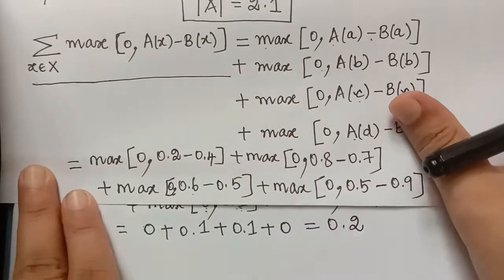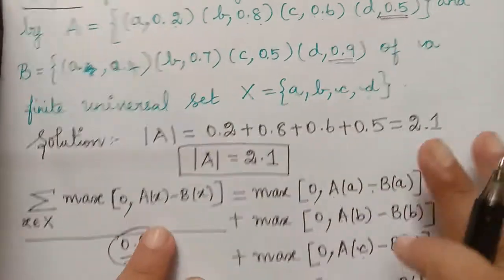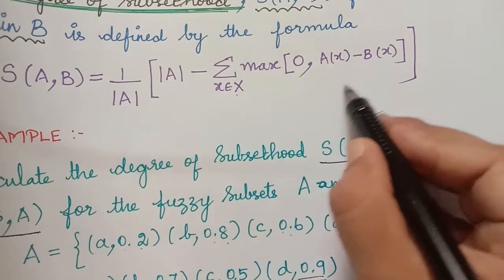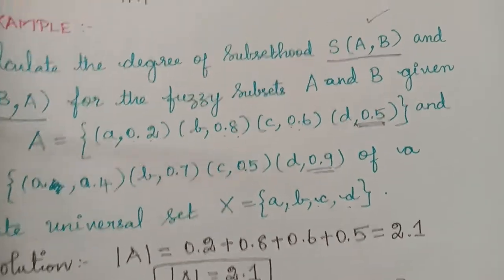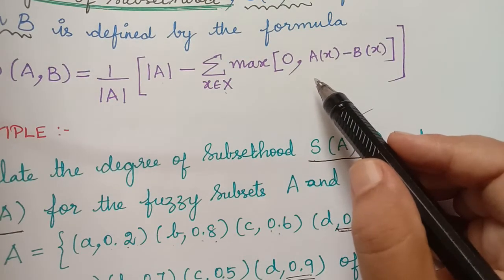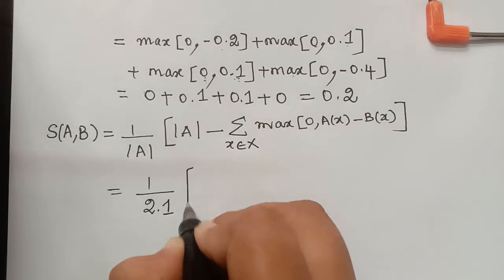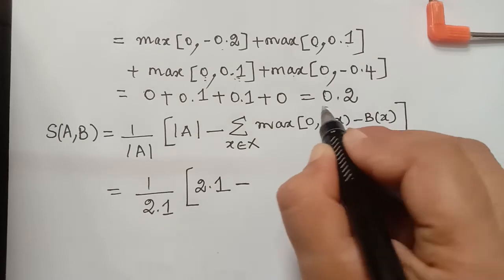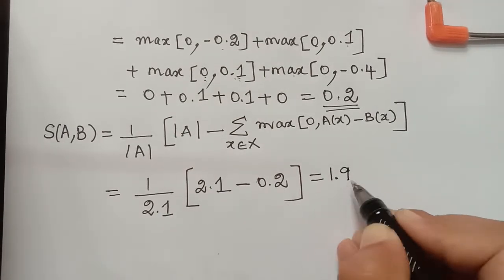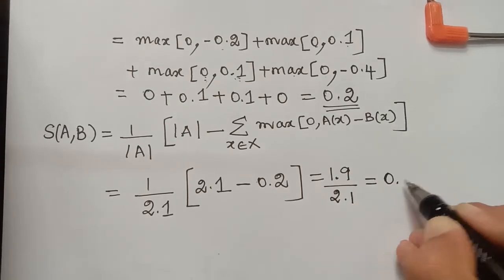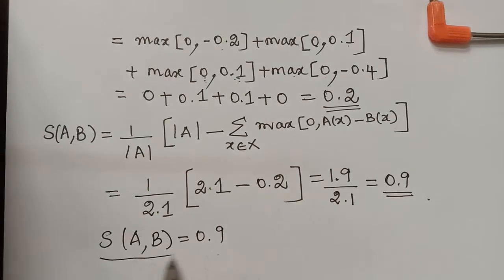Now substituting into the formula: S(A,B) = (1/|A|) × (|A| − summation) = (1/2.1) × (2.1 − 0.2) = 1.9/2.1 ≈ 0.9. Therefore the degree of subsethood of A in B is equal to 0.9.